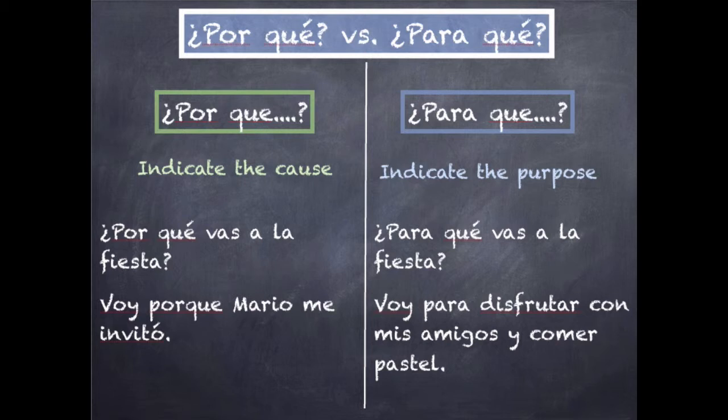'Por qué' — remember, por had a lot of the indications of 'by,' 'through,' or the reason 'because of this.' Both 'por qué' and 'para qué' can mean 'why' in different contexts, but when you ask 'por qué,' you're asking what the cause was. '¿Por qué vas a la fiesta?' — What was the reason you're going to the party? What happened that you are going to the party? 'Voy porque Mario me invitó' — I'm going because Mario invited me.